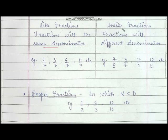And what are unlike fractions? Fractions with different denominators — that means the denominators will be different, not the same. For example: 4 upon 5, 3 upon 4, 7 upon 11, 12 upon 9. So these denominators are different, so these are unlike fractions.